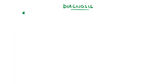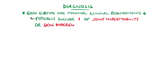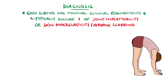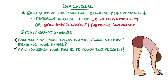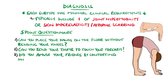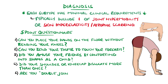Each subtype has its own set of criteria described as minimal clinical requirements. Screening for joint hypermobility can be done using a five-point questionnaire: Can you now or could you ever place your hands flat on the floor without bending your knees? Can you now or could you ever bend your thumb to touch your forearm? As a child, did you amuse your friends by contorting your body into strange shapes or could you do the splits? As a child or teenager, did your shoulder or kneecap dislocate on more than one occasion? And do you consider yourself double-jointed? Two positive answers are suggestive of hypermobility.